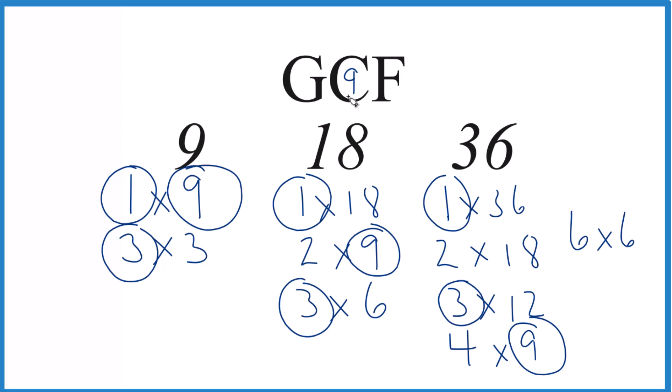This is Dr. B finding the greatest common factor for 9, 18, and 36. The answer is 9.